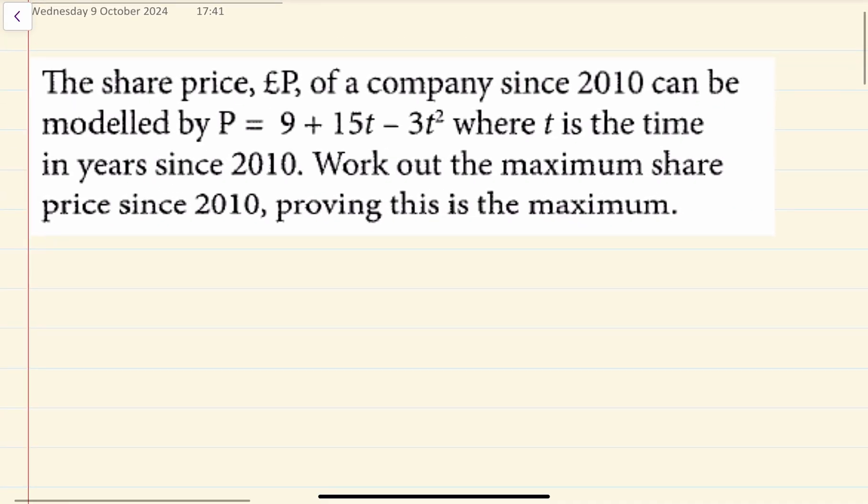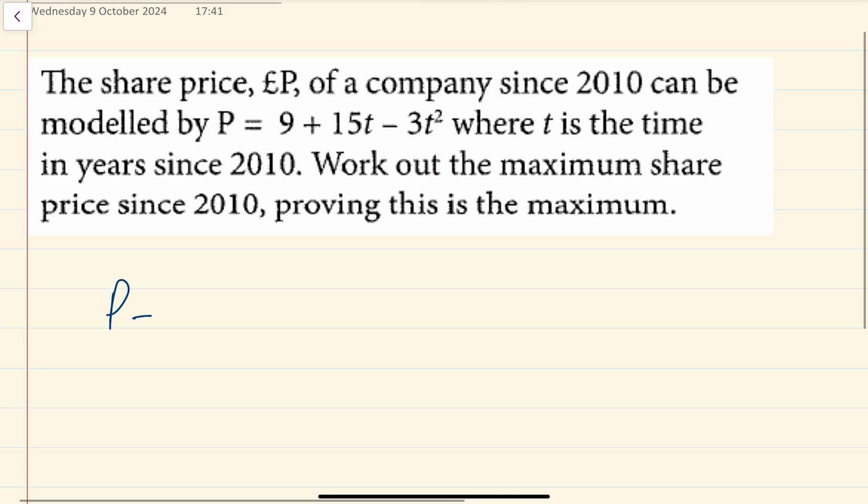This is a differentiation question, a maximizing question relevant to GCSE further mathematics or AS level mathematics. The share price in pounds of a company since 2010 can be modeled by P = 9 + 15t - 3t² where t is the time in years since 2010. Work out the maximum share price since 2010, proving it is maximum.